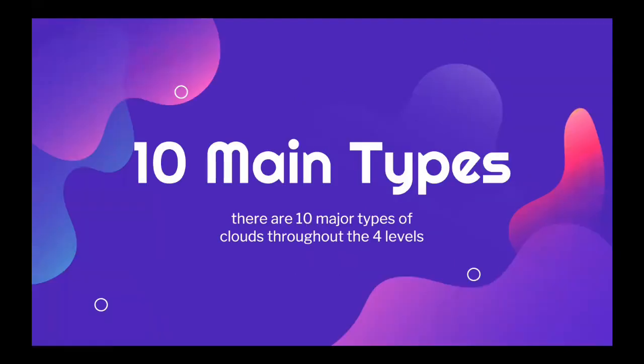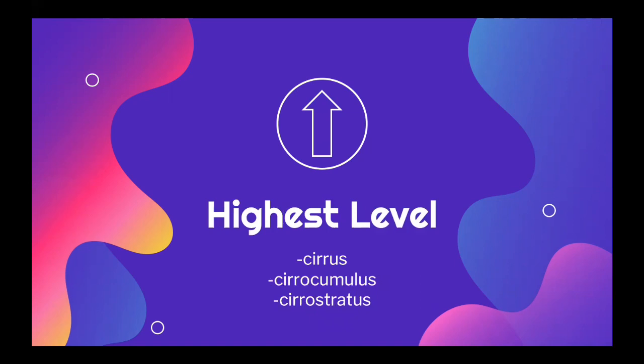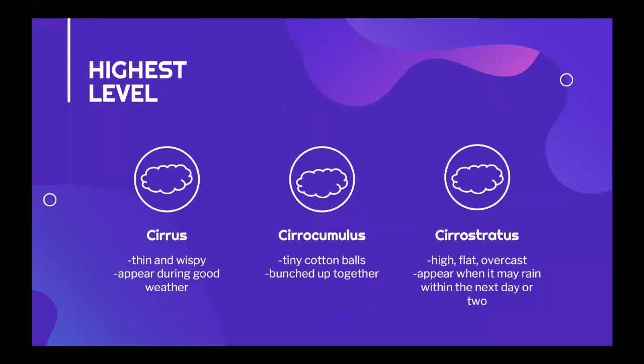So now that we've covered each level of clouds, let's move on to the 10 main types of clouds. On the highest level we have the cirrus, cirrocumulus, and cirrostratus clouds. The cirrus clouds are thin and wispy and they appear during good weather. Cirrocumulus clouds look like tiny cotton balls and they're usually bunched up together. And finally, cirrostratus clouds are high, flat, overcast clouds that appear when it may rain within the next day or two.